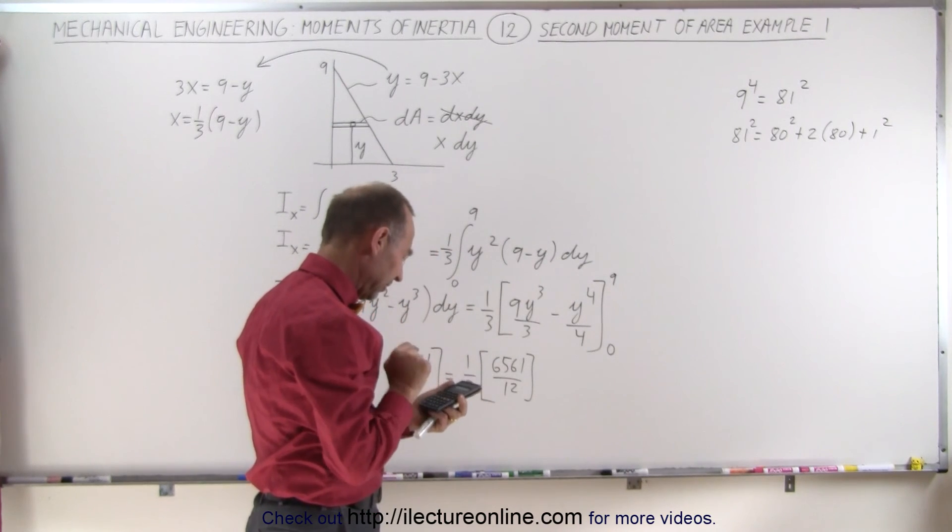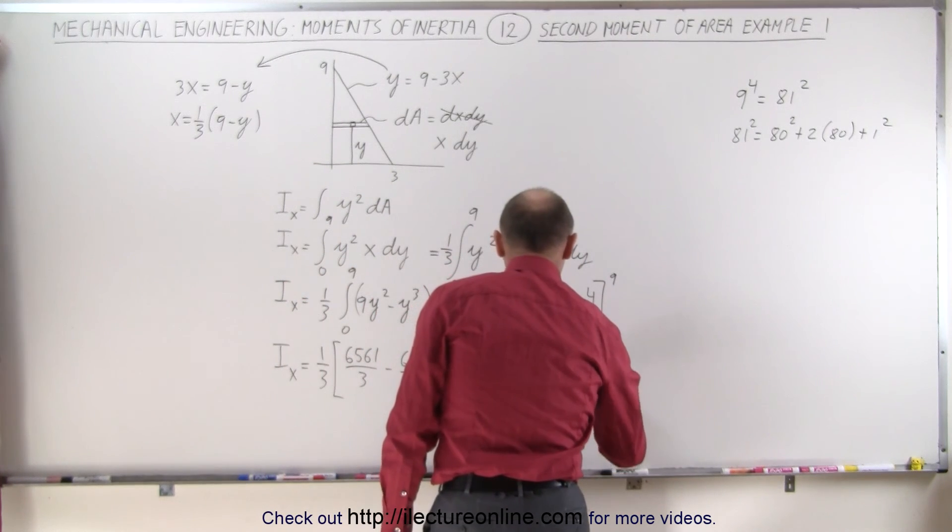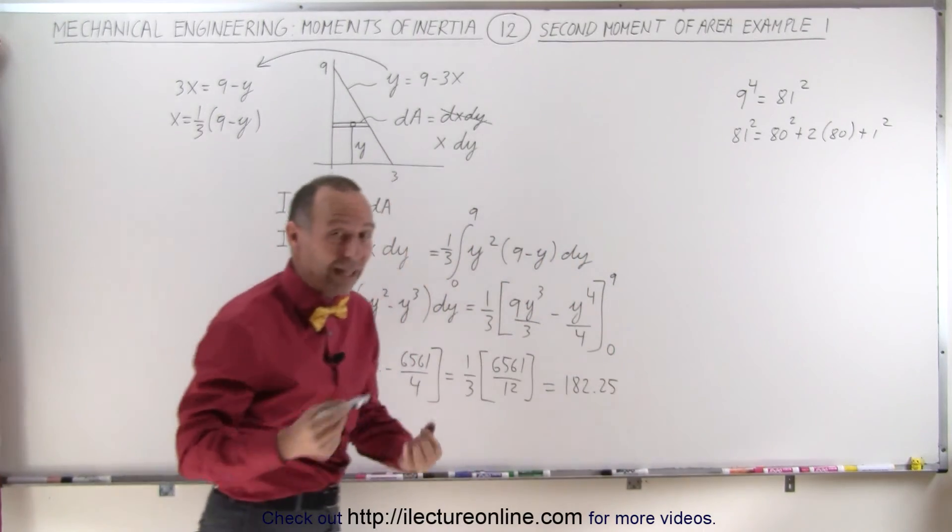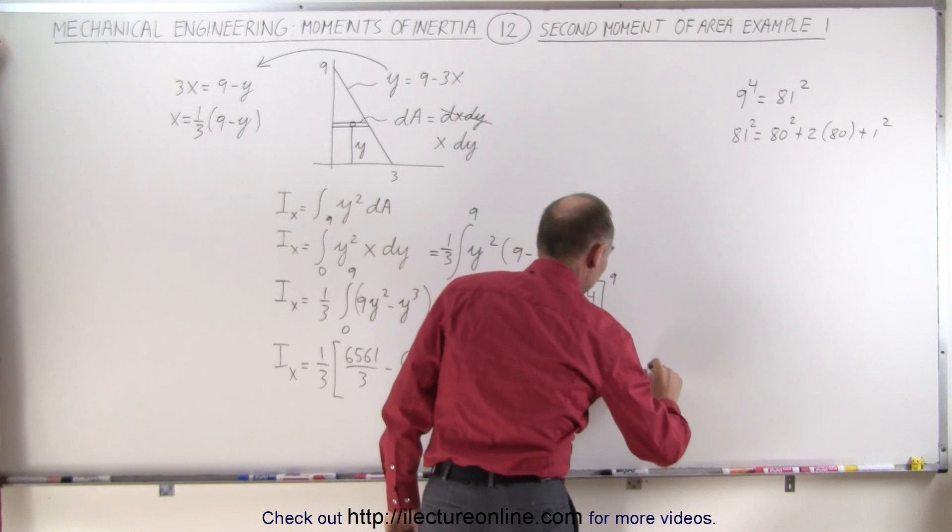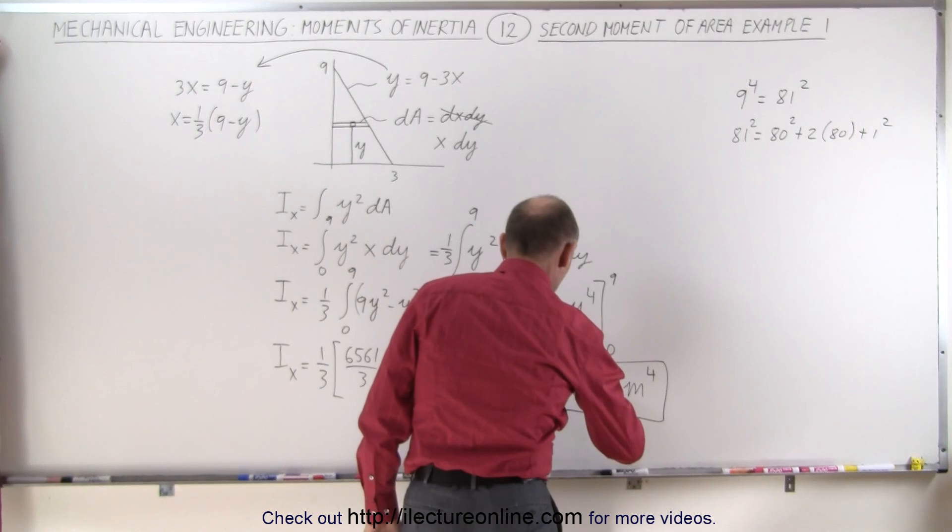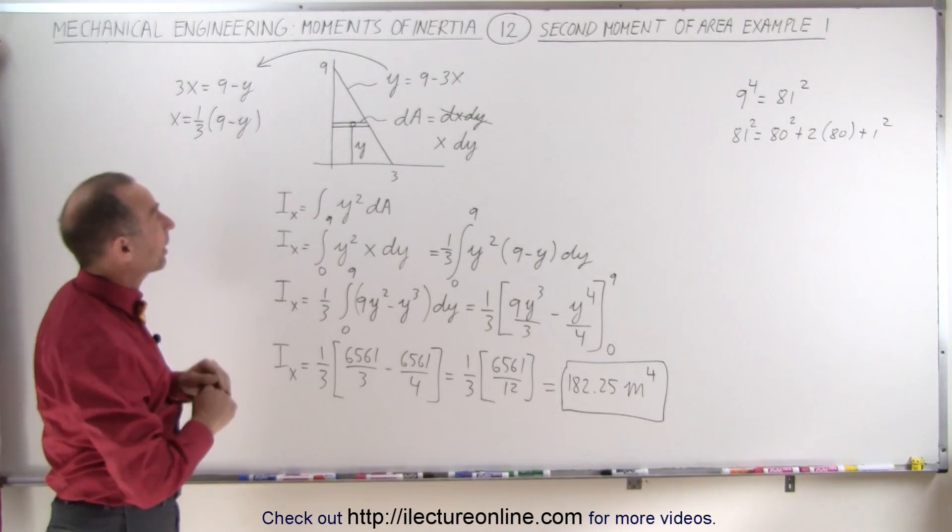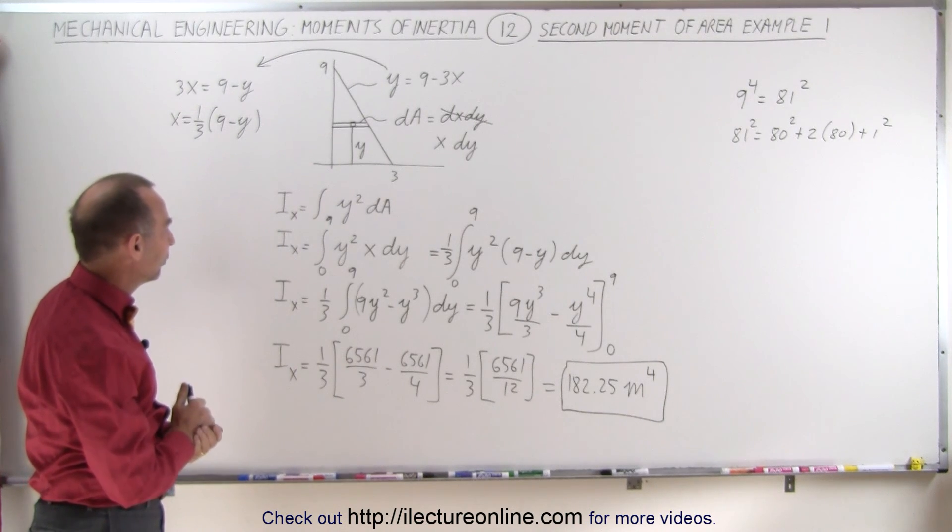6561 divided by 36 is 182.25. 182.25, and of course if the units were standard units and everything was in meters we would end up with meters to the fourth power. And that's how we calculate the second moment of area of this particular triangle relative to the x-axis.